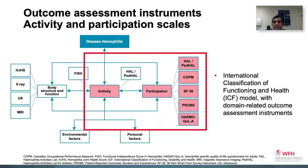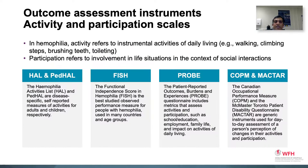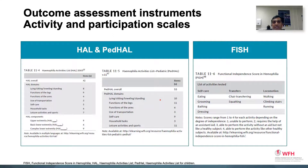Most tools that study these aspects assess the domains of both activities and participation together, rather than as separate domains. These instruments include disease-specific instruments like the Hemophilia Activity List, the PED-HAL, and the PROBE, as well as generic instruments like the Canadian Occupational Performance Measure — the COPM — and the MACTA. The HAL is a self-assessment questionnaire that assesses 42 activities in seven domains: lying down, sitting, kneeling, standing, functions of the leg, functions of the arm, use of transportation, self-care, household tasks, and leisure activities and sports.